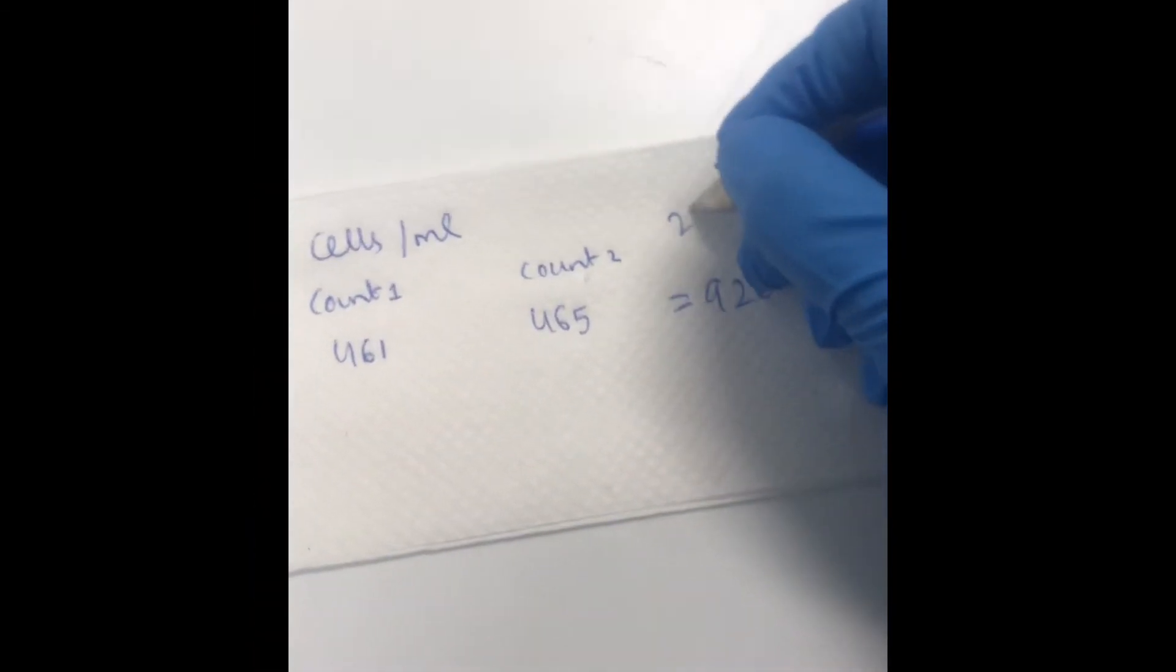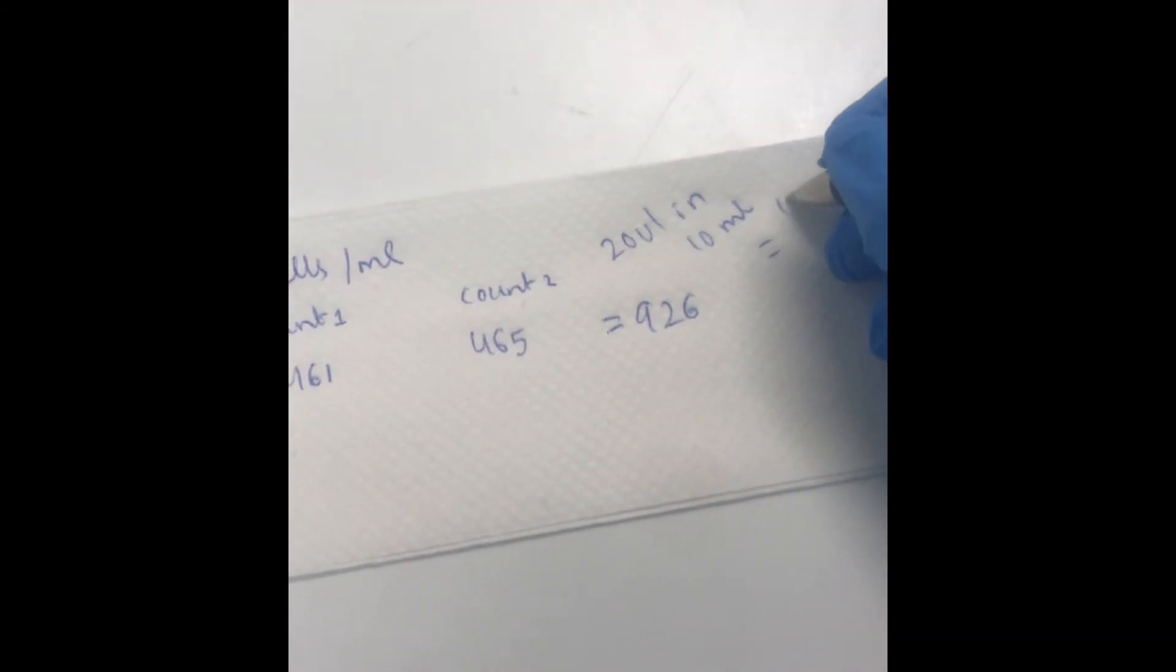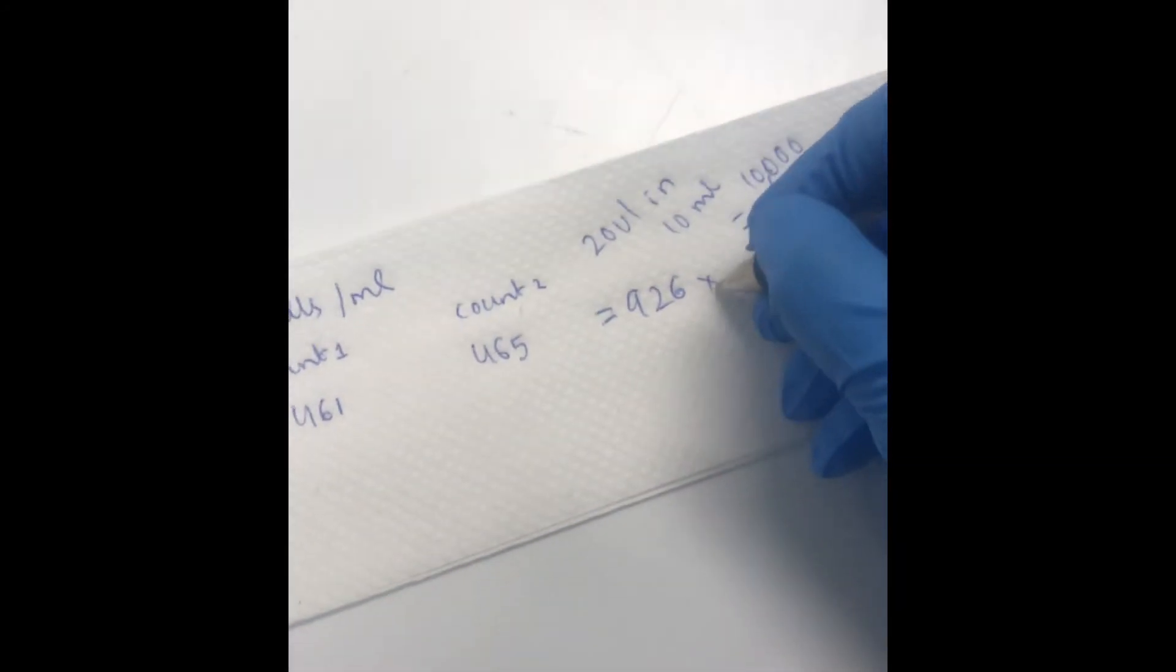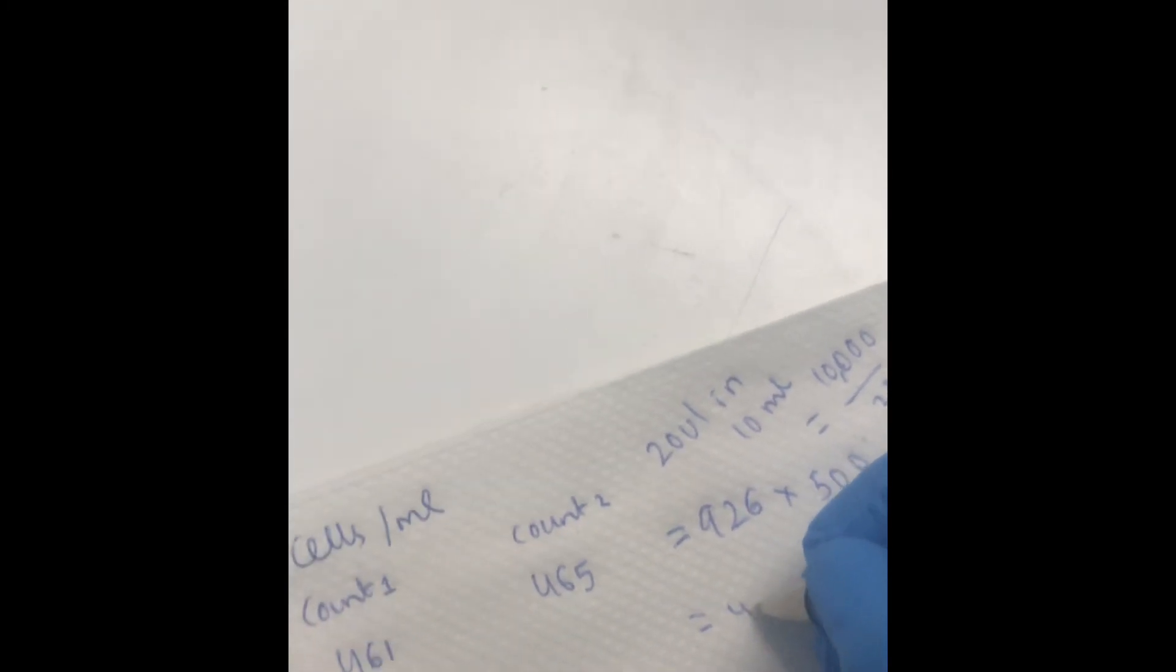Now I'm calculating dilution factor. So 20 microliters and 10 ml of isotonic solution, the dilution factor comes to 500. The 10 ml is 10,000 microliters. You multiply the dilution factor with the number of cells to give the number of cells in one ml of your solution. That's it.